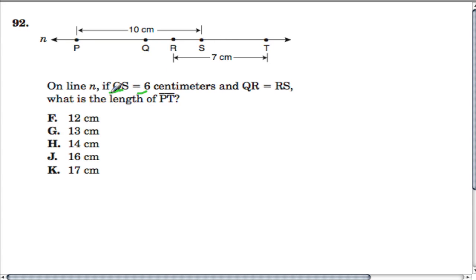Okay, so this problem, QS is 6. QS is the distance from point Q to S, and altogether it's 6, which means that if this whole section right here from P to S is 10, that PQ right here must be 4.